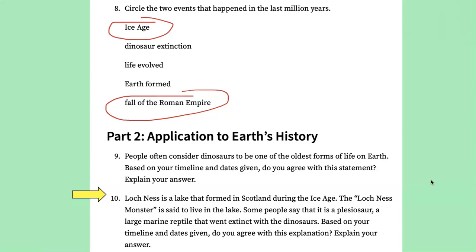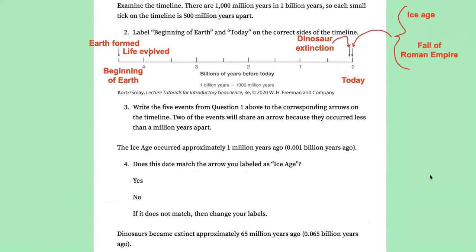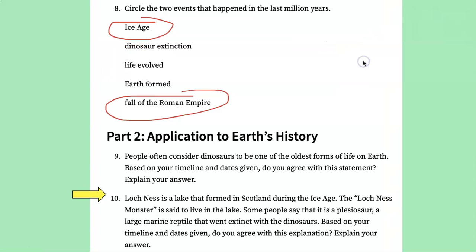Number 10 says the Loch Ness is a lake formed in Scotland during the Ice Age. And the Loch Ness monster, which you might have heard of, is said to live in the lake. Some people think that this monster is actually a plesiosaur, which is a marine dinosaur, basically a reptile that swam in the oceans back at the time of the dinosaurs and then went extinct with the dinosaurs. So given the timeline and dates, what do you think about this explanation? Well again, if you look back here, the Ice Age formed the lake. The dinosaurs went extinct 65 million years earlier. So probably not.